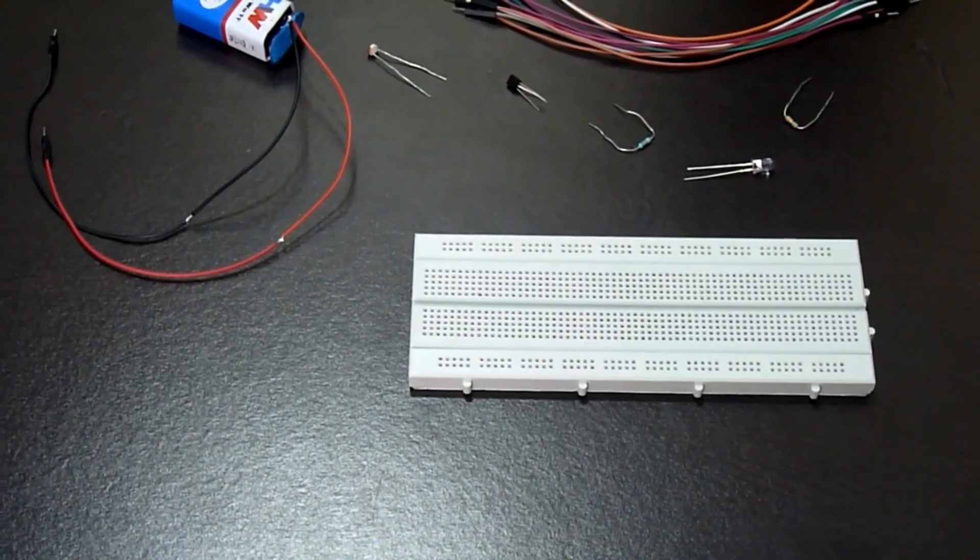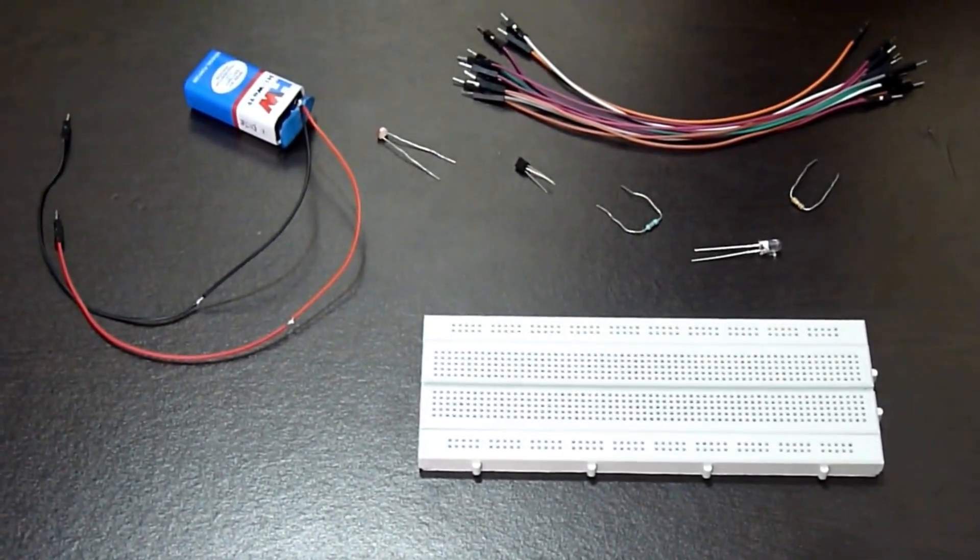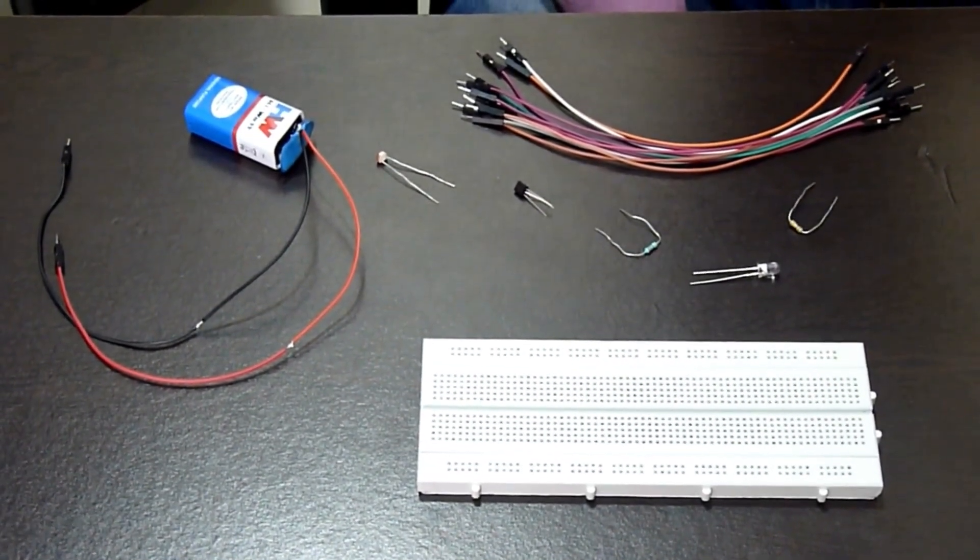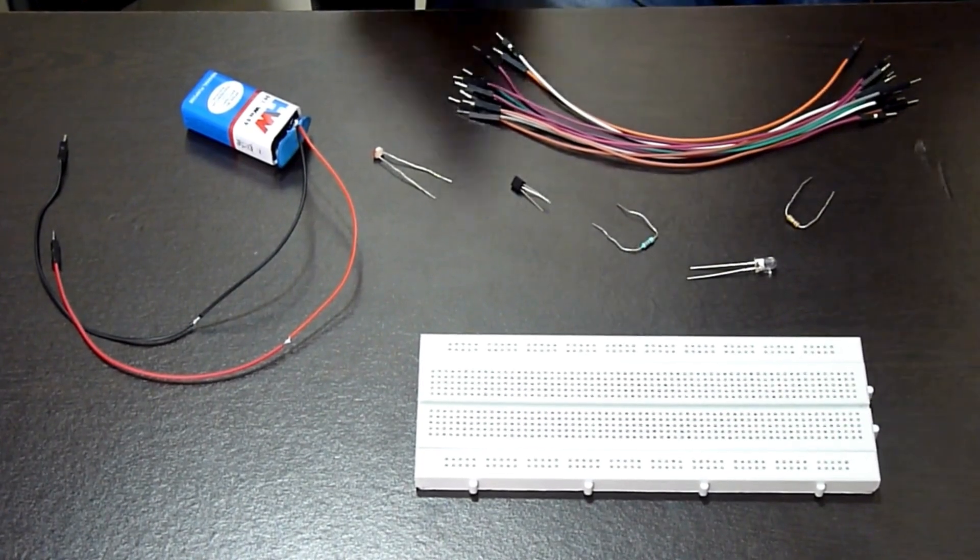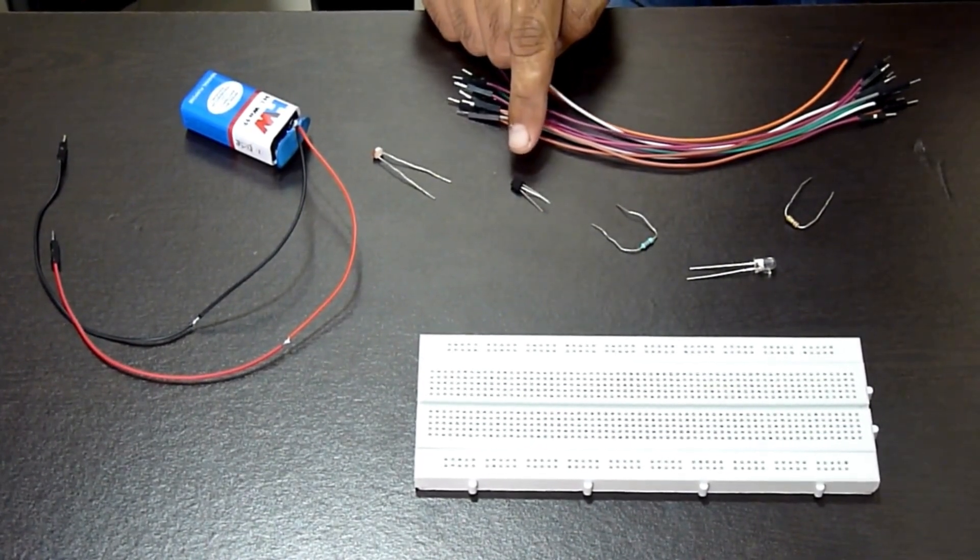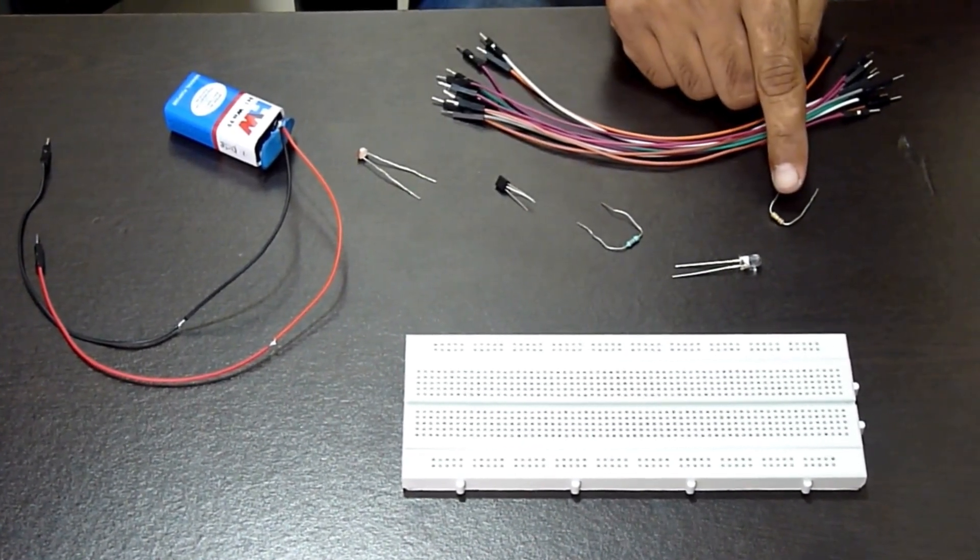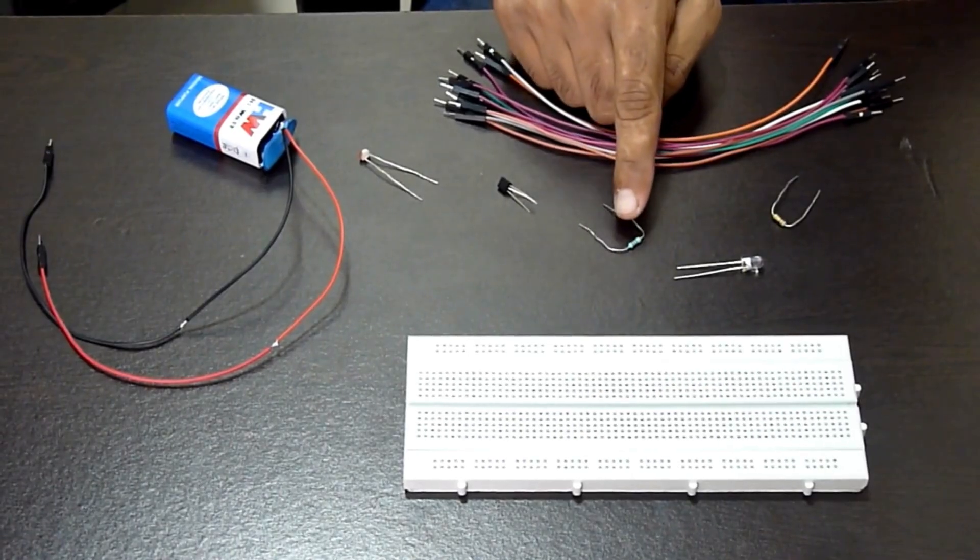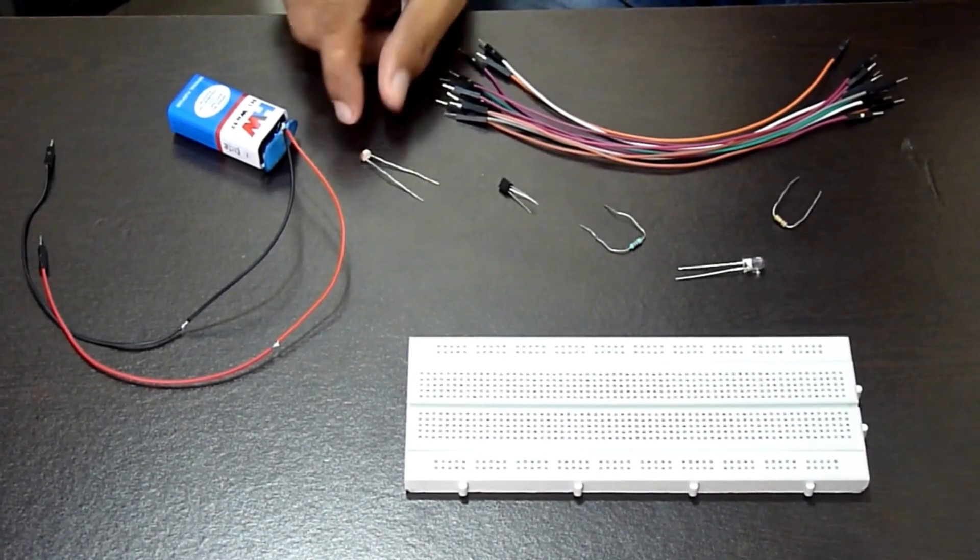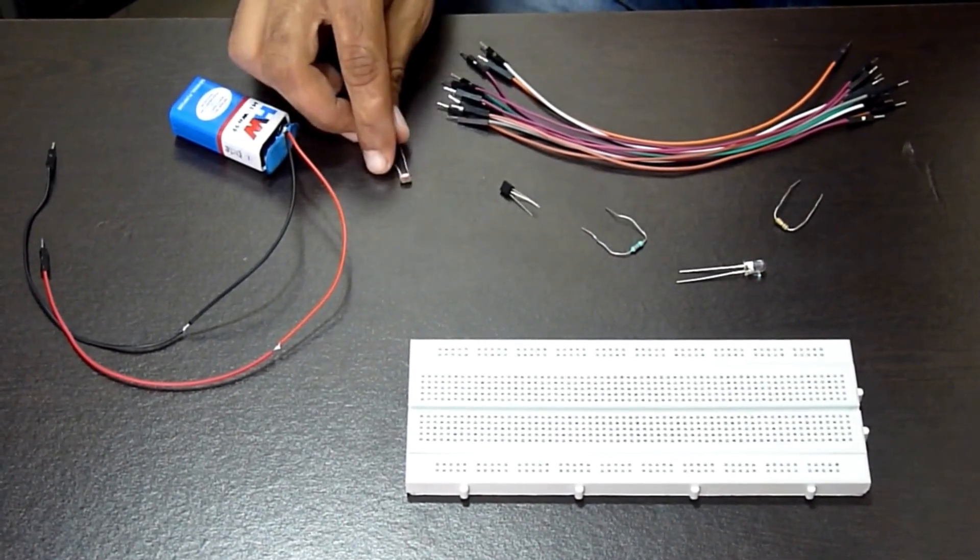The components required for this project are: BC547 Transistor, one 100 kilohm resistor, one 470 ohm resistor, one Light Dependent Resistor (LDR),